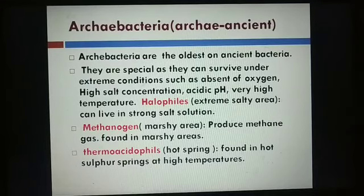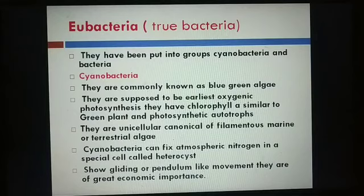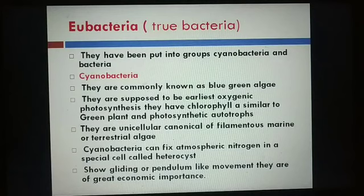Archaebacteria are ancient bacteria that can survive in very harsh conditions. The next category is Eubacteria, which can be categorized into two groups: cyanobacteria and bacteria. Cyanobacteria are very important — they are commonly known as blue-green algae. They are supposed to be the earliest oxygenic photosynthesizers. They have chlorophyll A, similar to green plants, and are photosynthetic autotrophs.